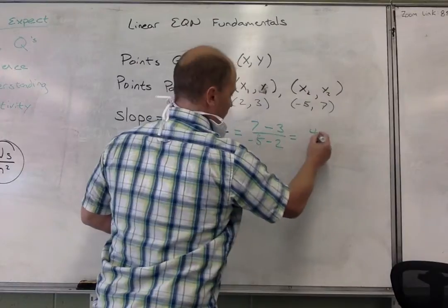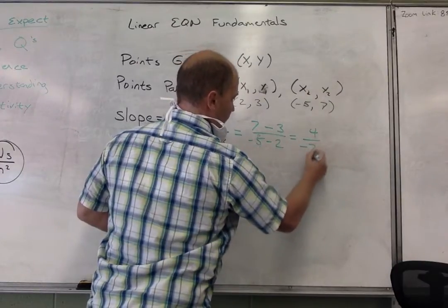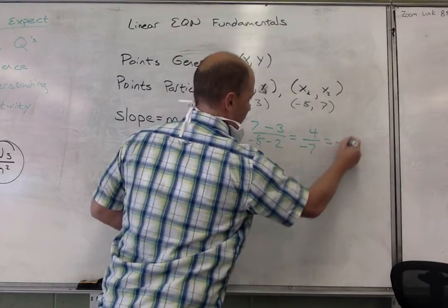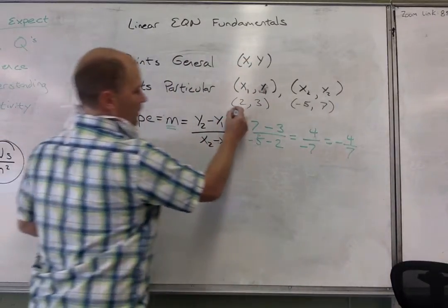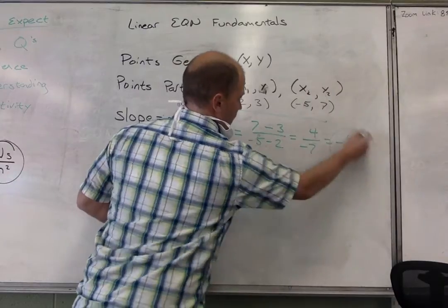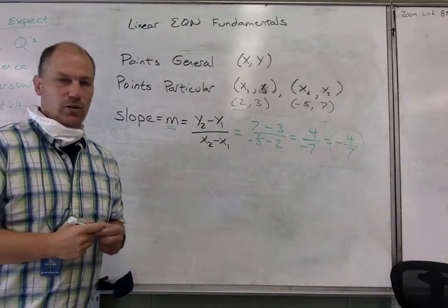And now I can make the calculation, and the answer is 4 over negative 7, which is the same as negative 4 7ths. So now I know that my slope between these two points is negative 4 7ths.